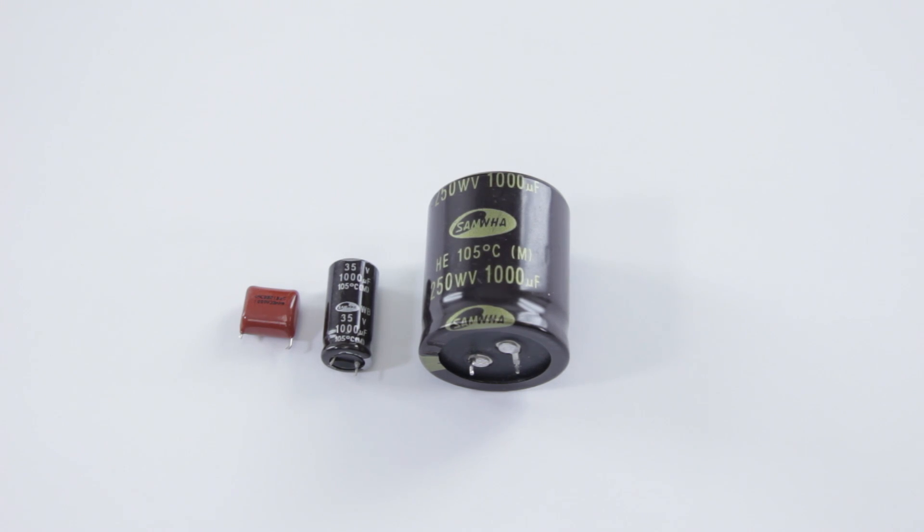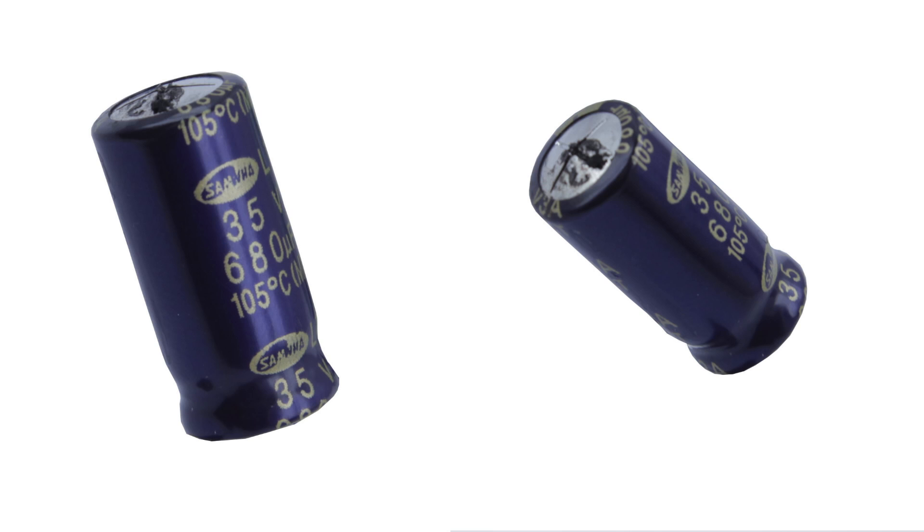When they begin to fail, they may start to produce gas inside of them which will result in the tops becoming puffy. If it's bad enough, the top might burst open and allow the dielectric inside, the insulating layer, to ooze out. So you'll often see a brown substance on top of the cap and sometimes on the board as well.